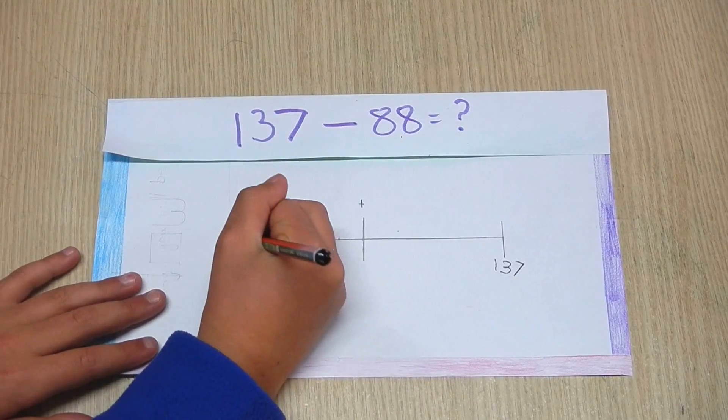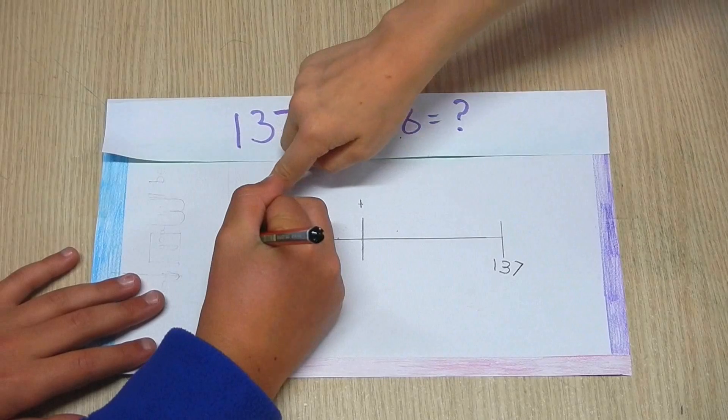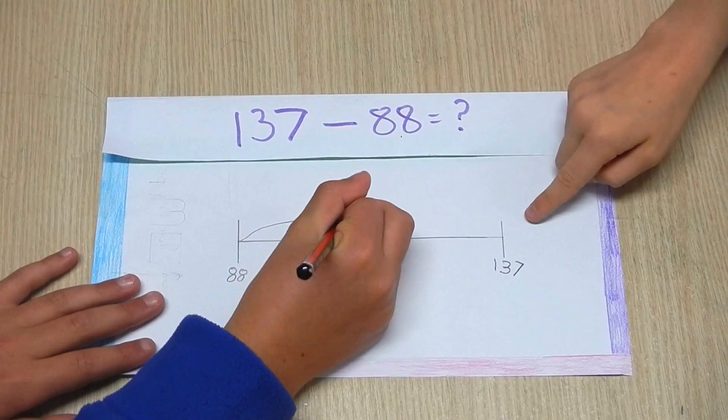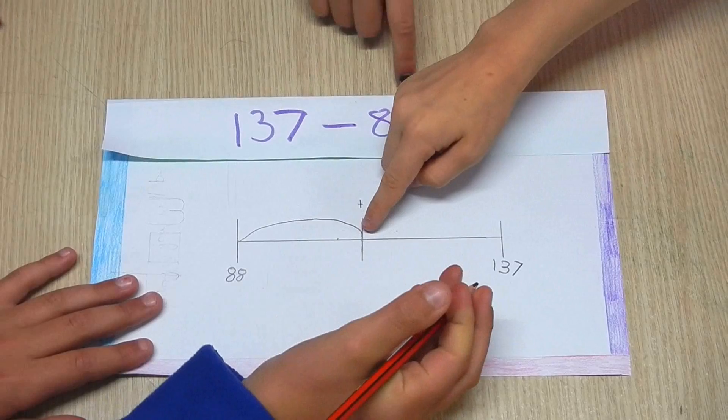First, you will have your numbers: 88 and 137, and your tidy number, 100.